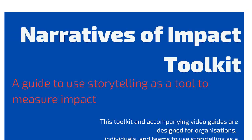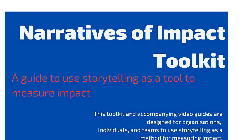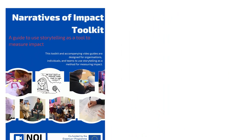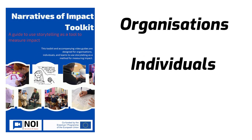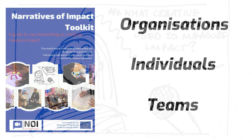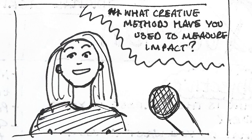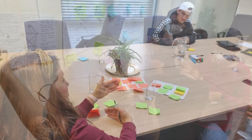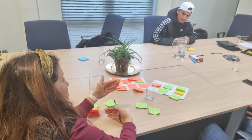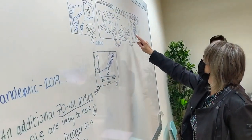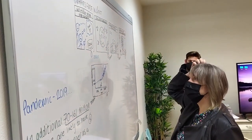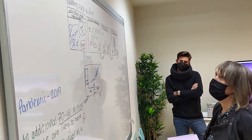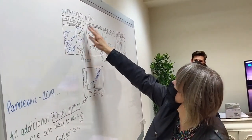Welcome to the Narratives of Impact Toolkit. This toolkit and accompanying video guides are designed for organisations, individuals and teams to use storytelling as a method to measure impact. Using storytelling to measure impact is a creative way to engage with people in an evaluation and learning process. Stories are useful tools for helping us to see what is working and what needs to be improved, and can be valuable ways of collecting important data and sharing it in interesting ways.